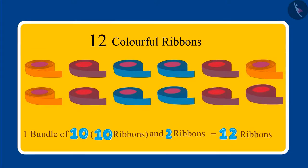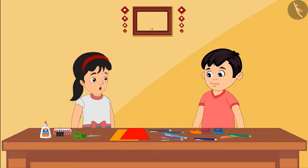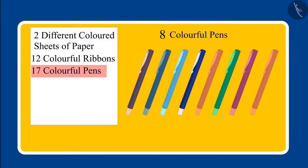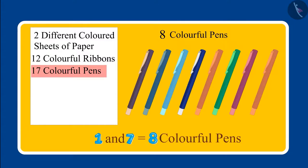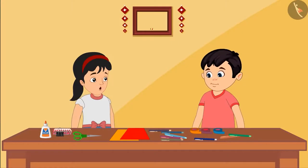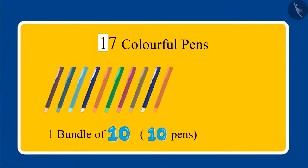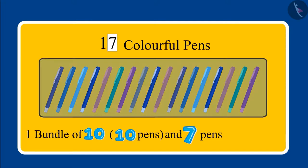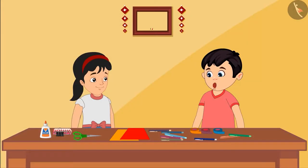One means one bundle of ten, that is ten ribbons, and two means two more ribbons, so in total it becomes 12 ribbons. Chotu understands his mistake and realizes he also read the number of pens incorrectly — he added one and seven and that's why he got eight pens. So now the correct number of pens is: one bundle of ten and seven more pens, making seventeen pens.